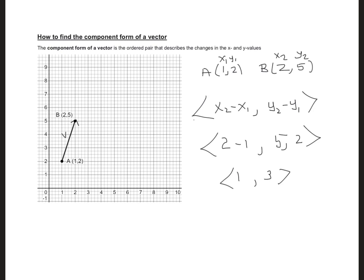And when I have, why do I need the component form? I need the component form because when I get the component form it's going to correspond with this definition. It describes the change in the x and y values. Whenever I see a vector in component form, immediately I'm able to know the direction along the x axis and the direction along the y axis.